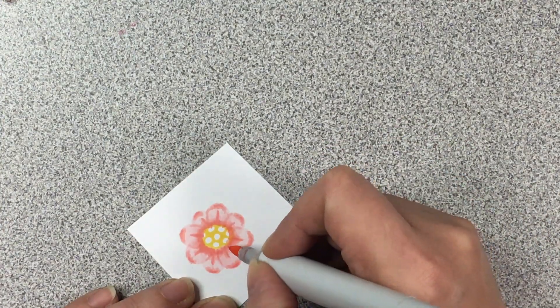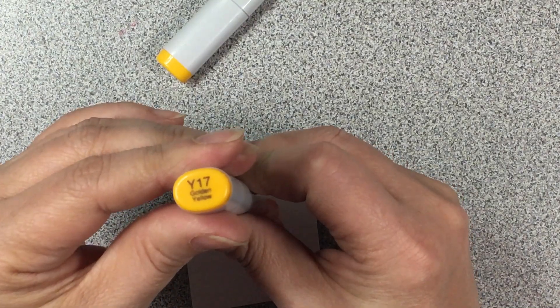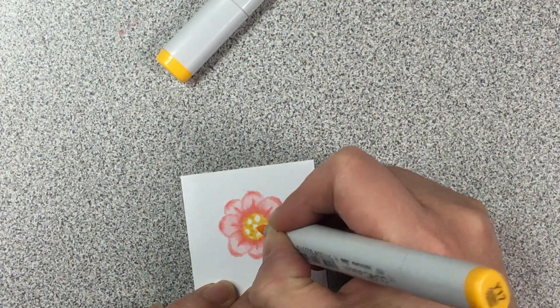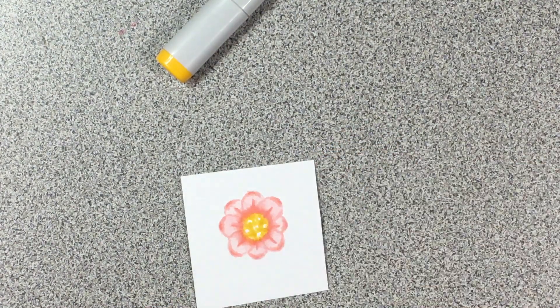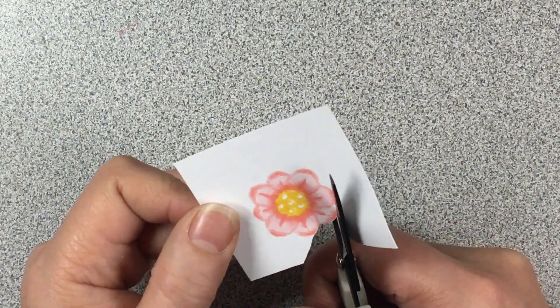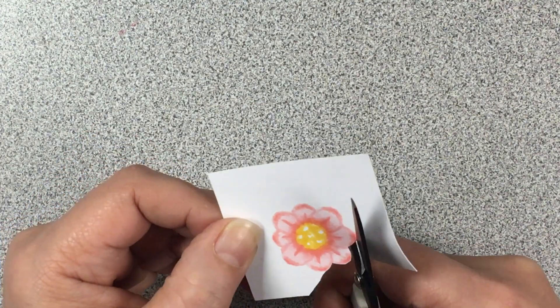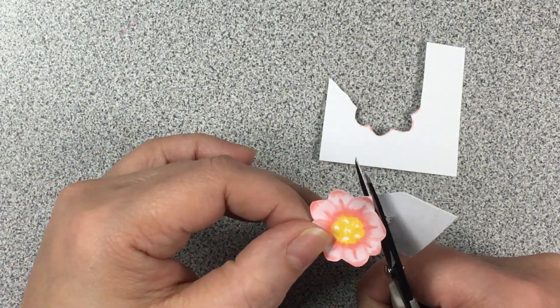And once the ink there dries it will fade a little bit so it won't be as prominent. And then for the center I'm just kind of dotting around that just to lighten up those white dots because they were a bit too white. And then we'll fussy cut that out.